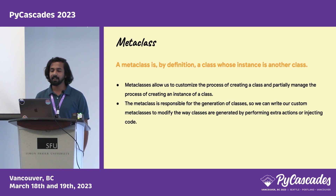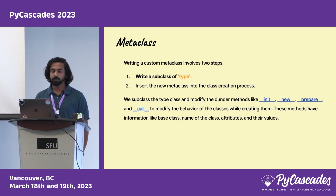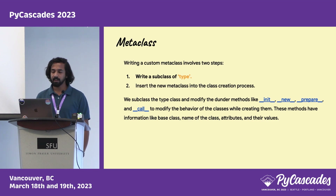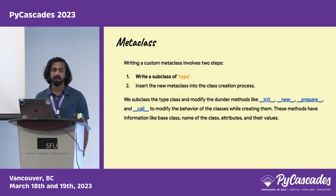A metaclass is a class whose instance is another class — it is used to create other classes, and we can modify or extend the behavior of classes using metaclasses. To write custom metaclasses, we create a subclass of the default metaclass type, then add the new metaclass into the class creation process by modifying dunder methods like __init__, __new__, __prepare__, and __call__ to change the default behavior.